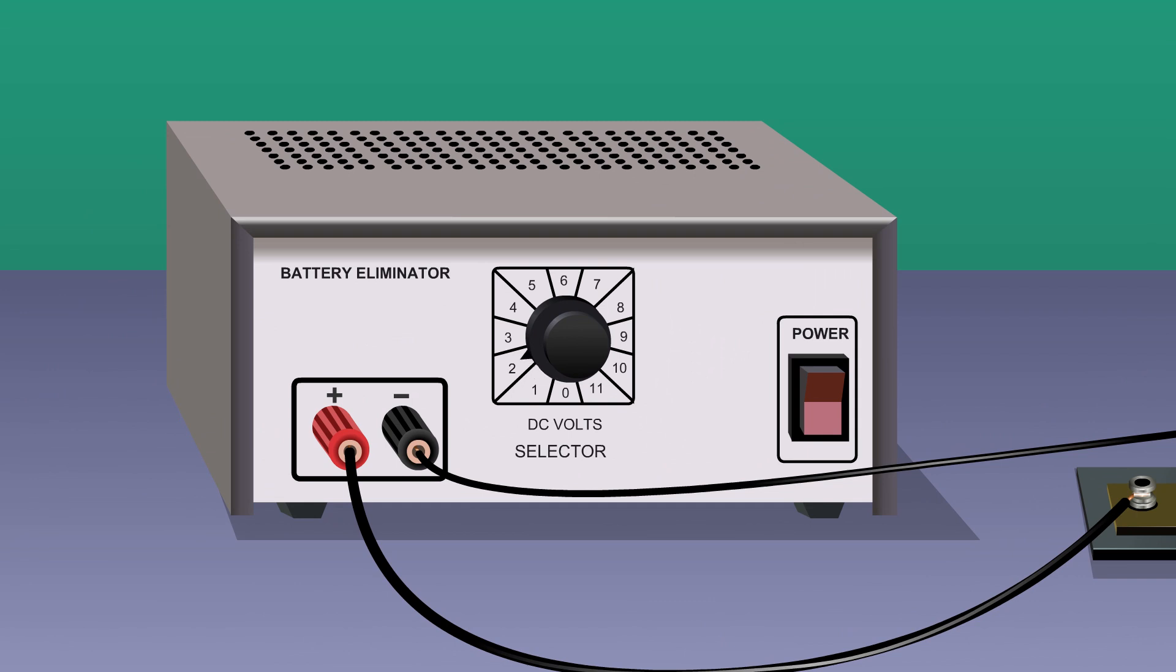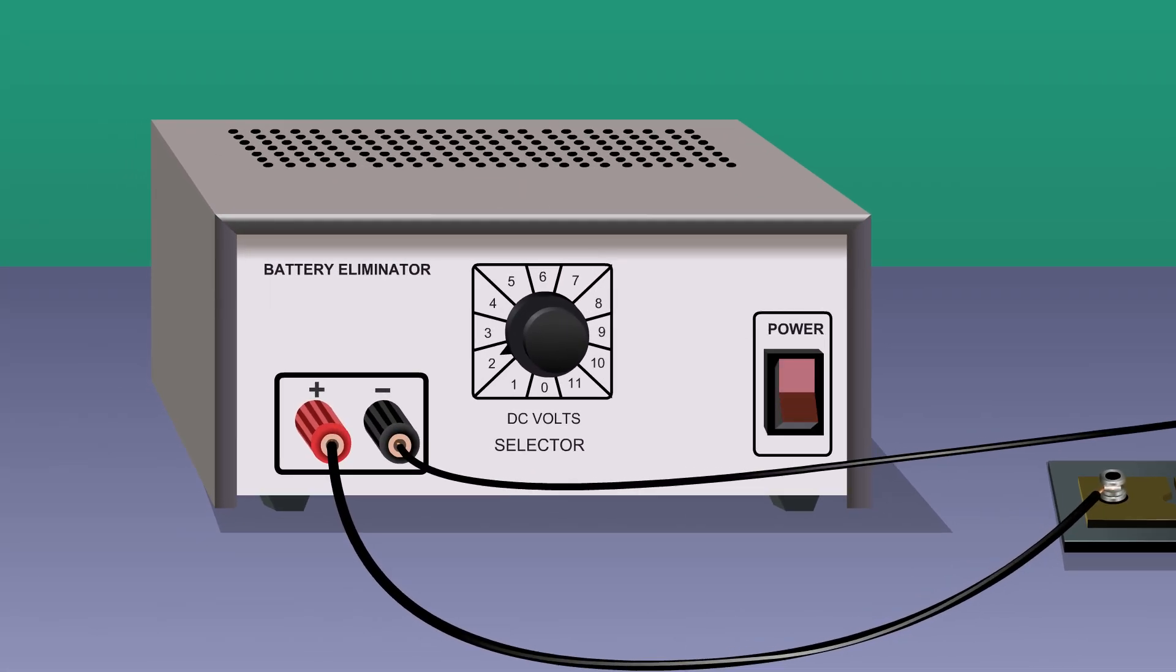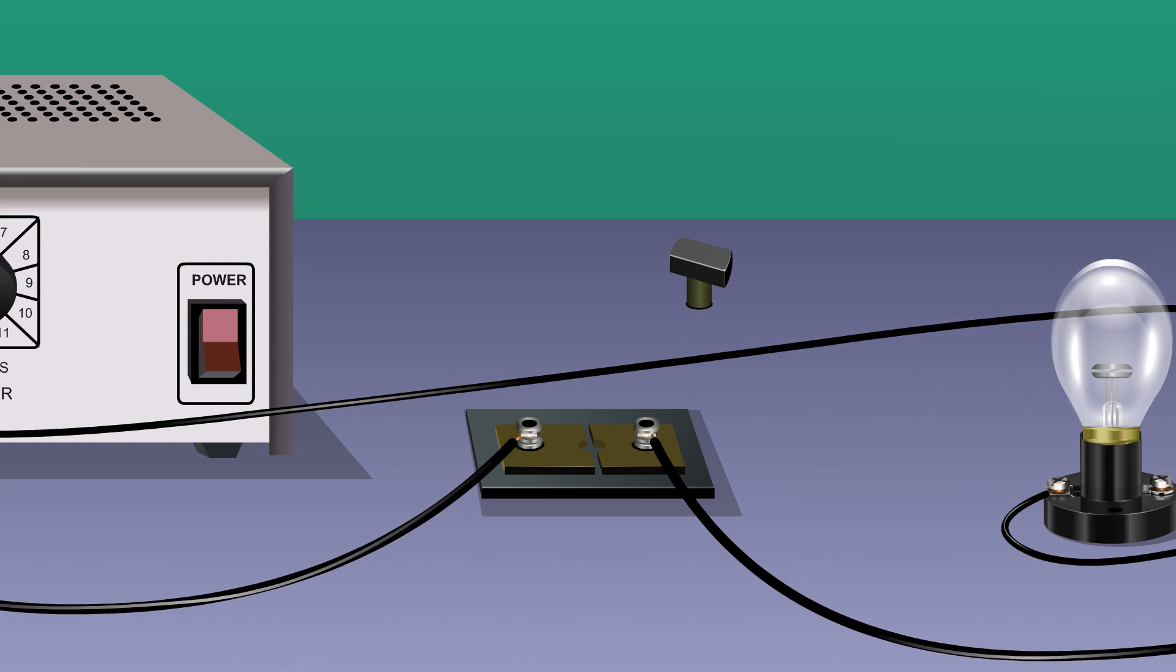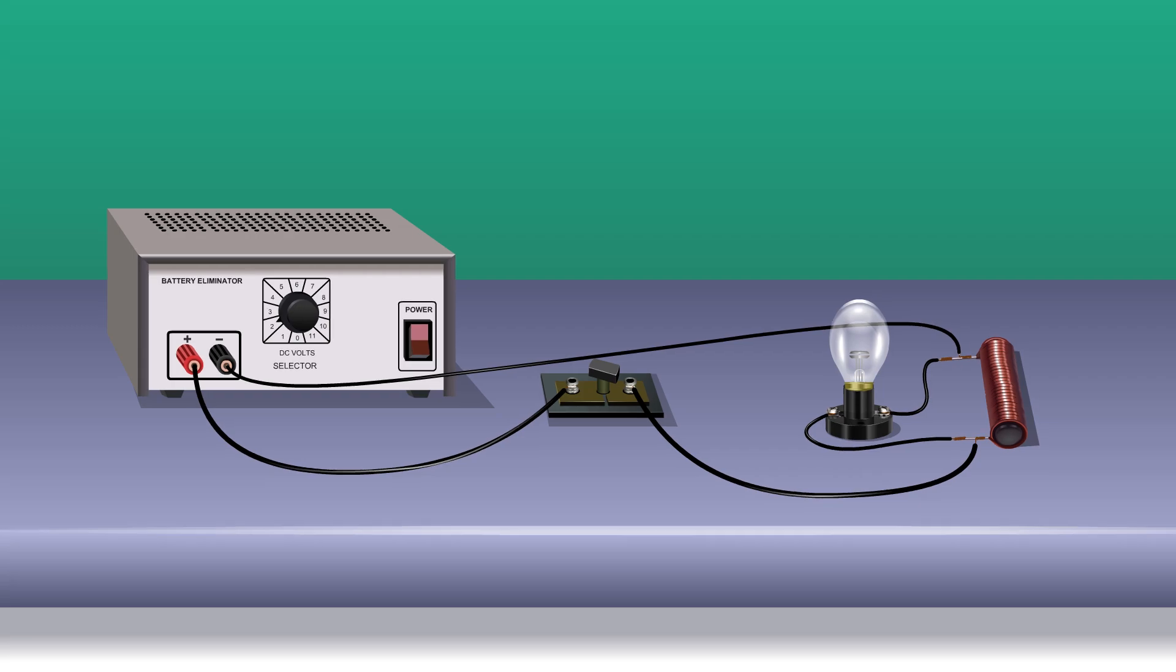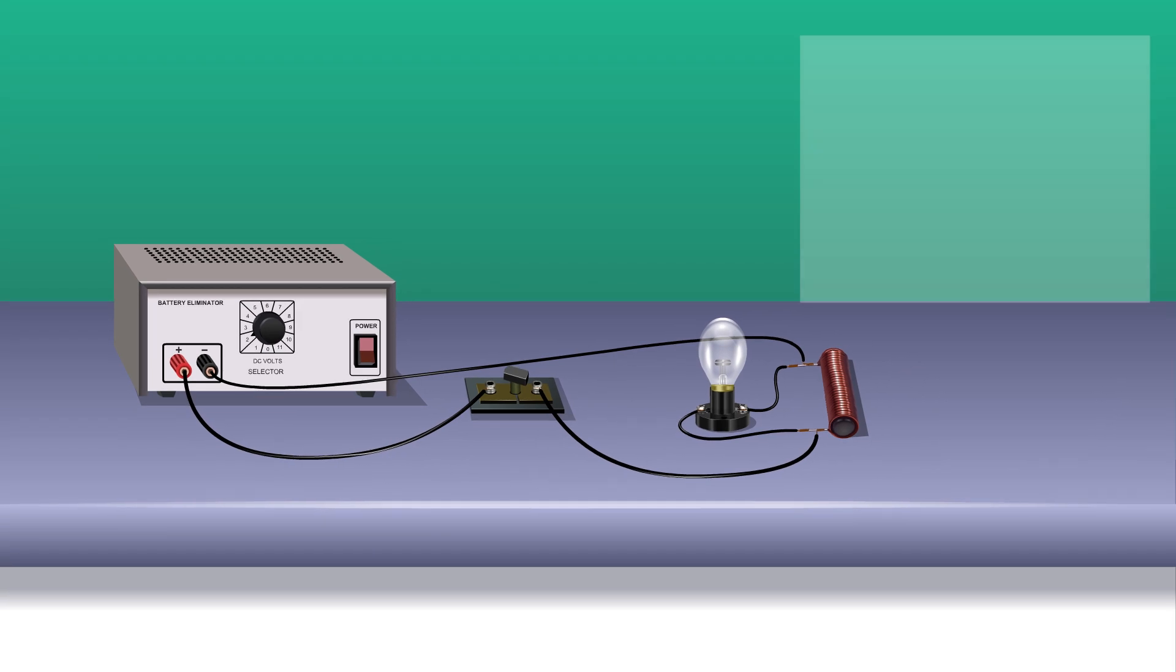Set the voltage of the battery eliminator to two or three volts. Switch on the battery eliminator. Close the one-way key. Observe if there is any change to the neon lamp.